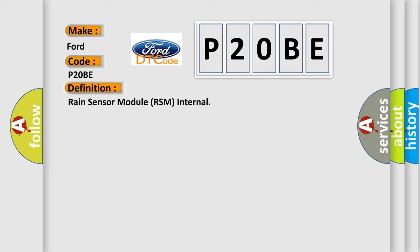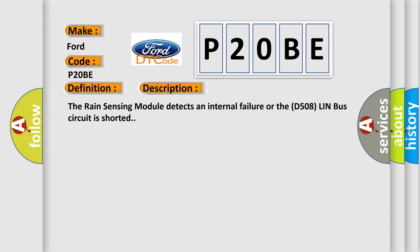And now this is a short description of this DTC code. The rain sensing module detects an internal failure or the D508 LIN bus circuit is shorted.